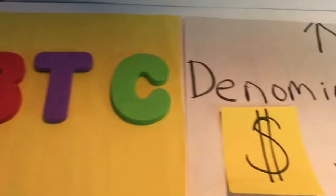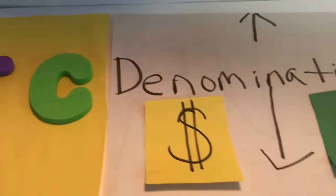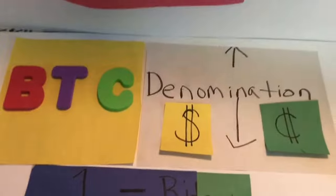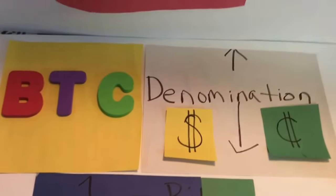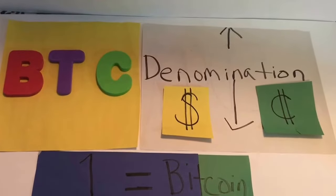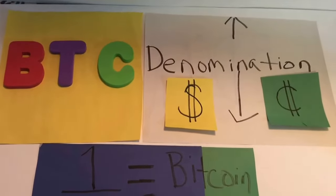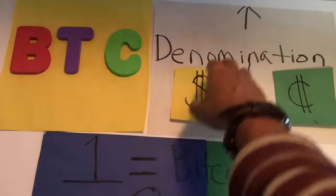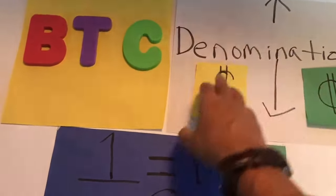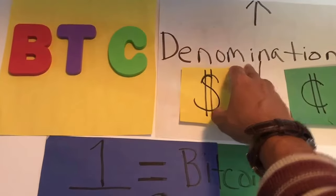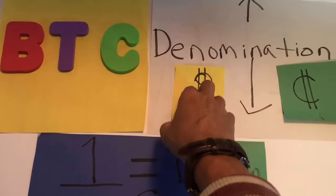We have BTC Bitcoin, and we already have the existing denominations of dollars and cents. The concept of denominations — the designation of different value units — is one of the few financial terms we'll port over from the old monetary system. That's basically what denomination is: the value units of a monetary system.